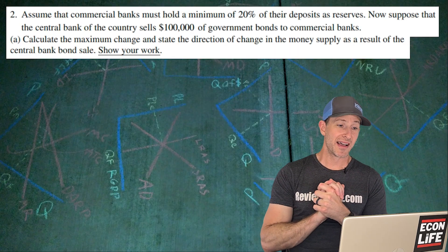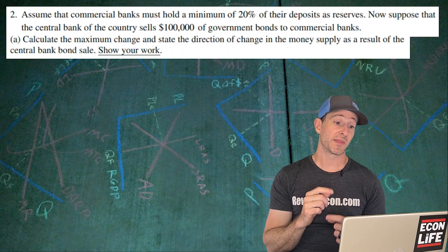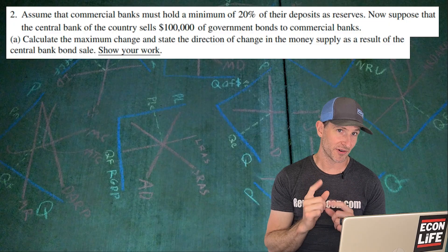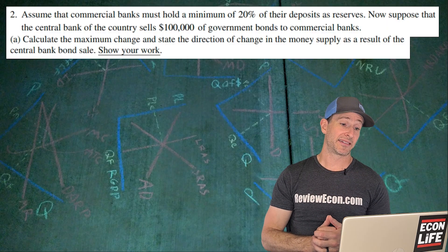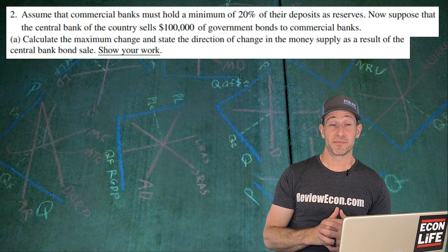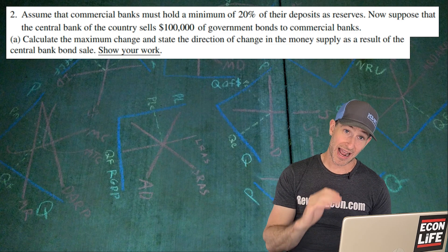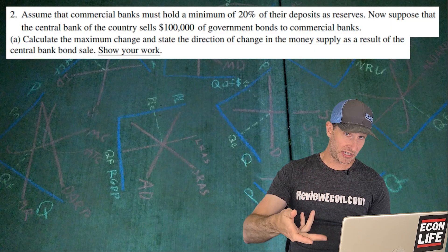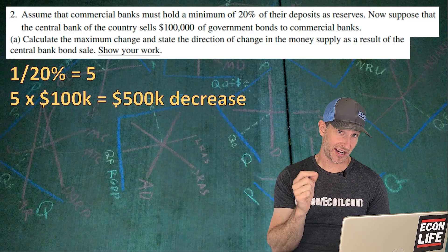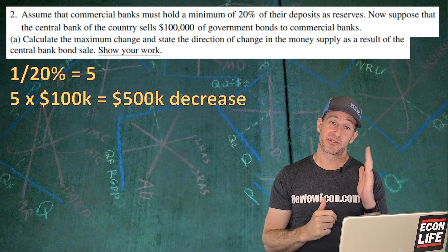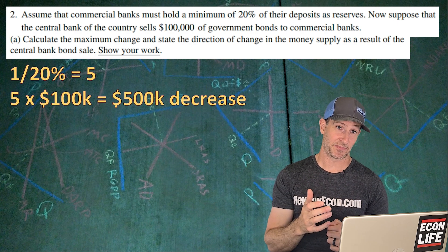On to question number two. We're going to assume that commercial banks hold a minimum of 20% required reserves, so that's 20% reserve requirement. We're going to assume that the central bank sells, sell means smaller, $100,000 worth of government bonds to commercial banks. We have to calculate what will happen to the money supply. Since they're selling these to actual banks, that's going to reduce their excess reserves by $100,000. We're going to do the multiplier: one divided by 20% gives us the money multiplier of five. Five times that sale of $100,000 worth of bonds gives us $500,000 decrease in the money supply at most.